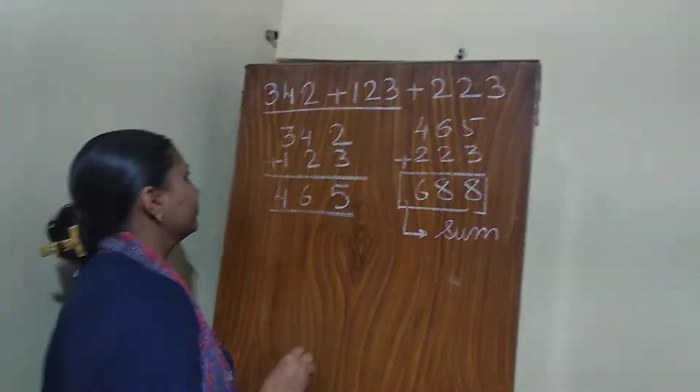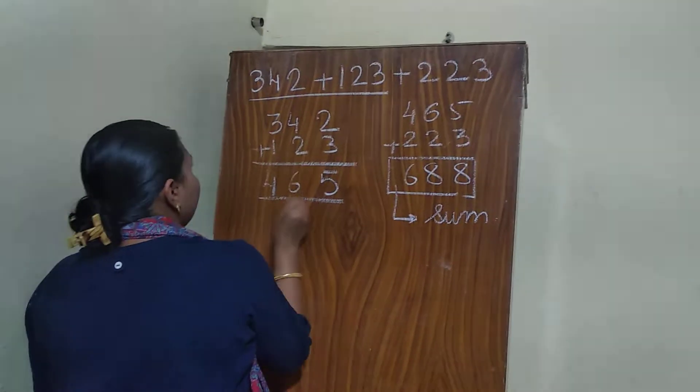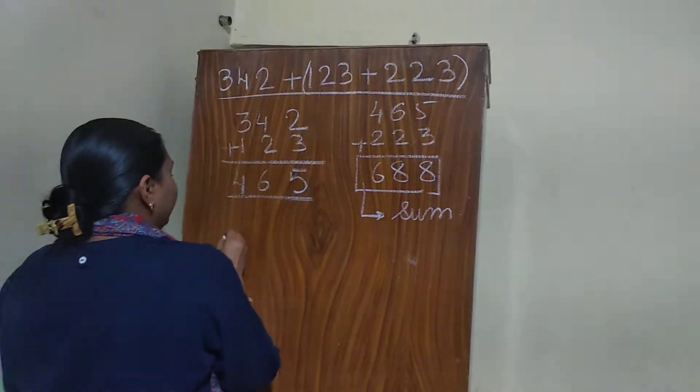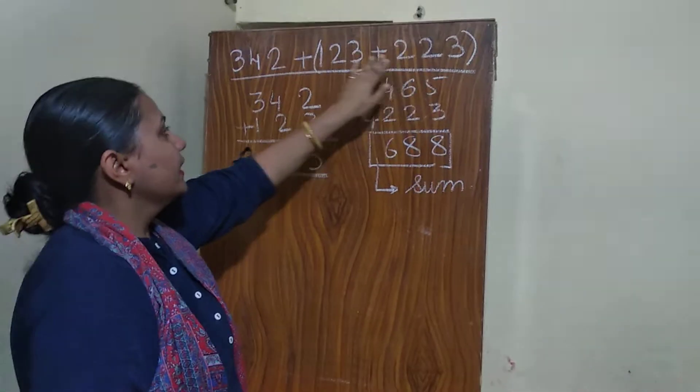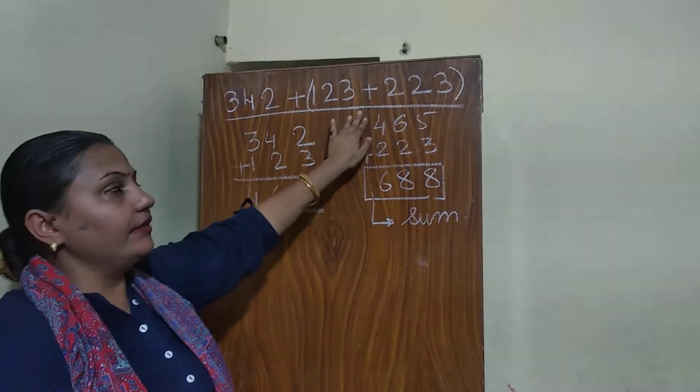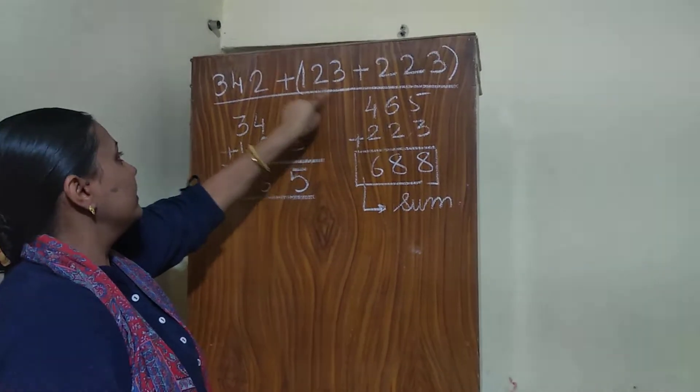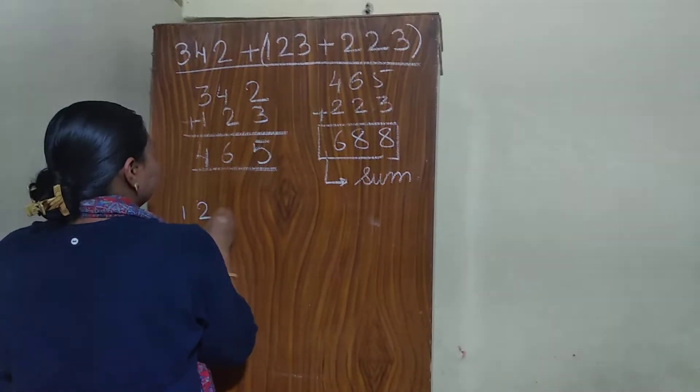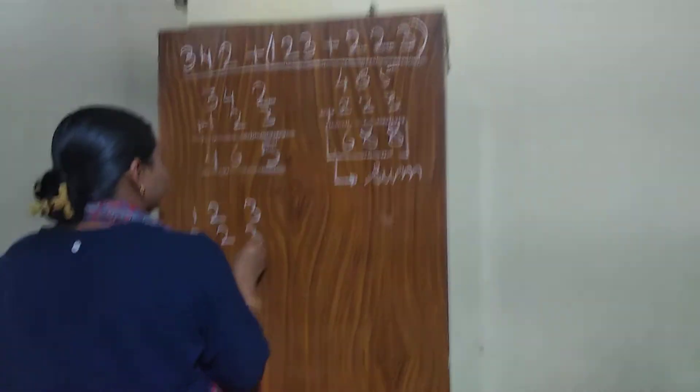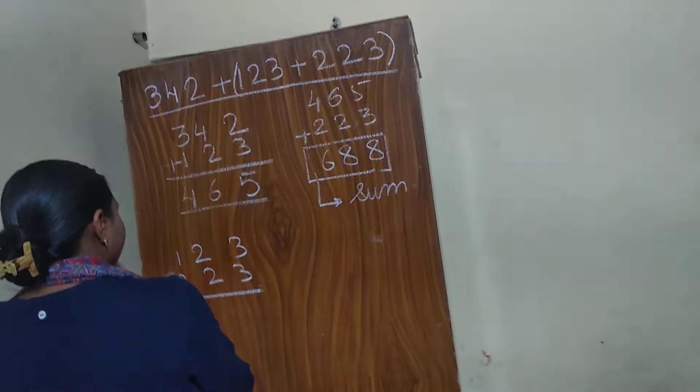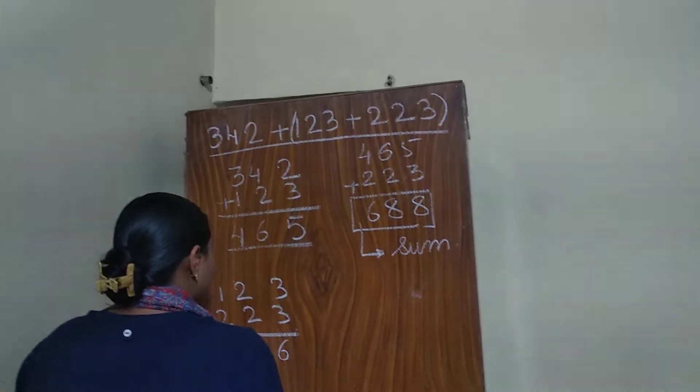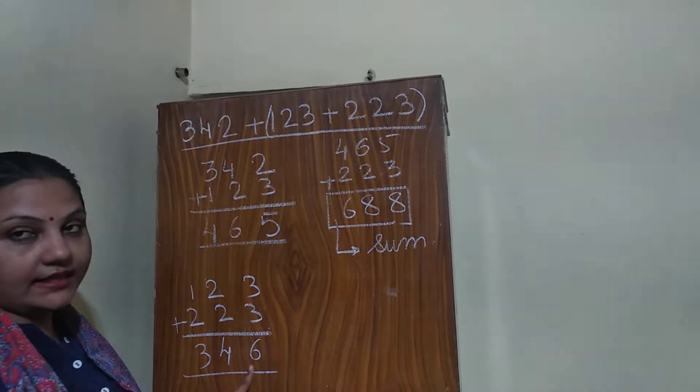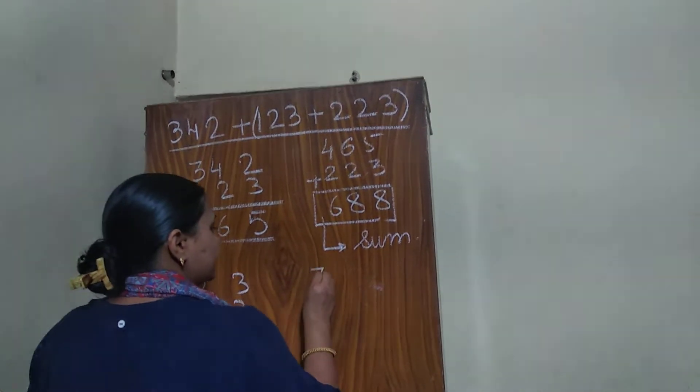Okay, but if I will take this 2 numbers first, means I will add this 2 numbers first, then whatever the answer I will get, then with that answer, I will add this 3rd addend. Then, what happened, let us see, 346 is the answer. Now,